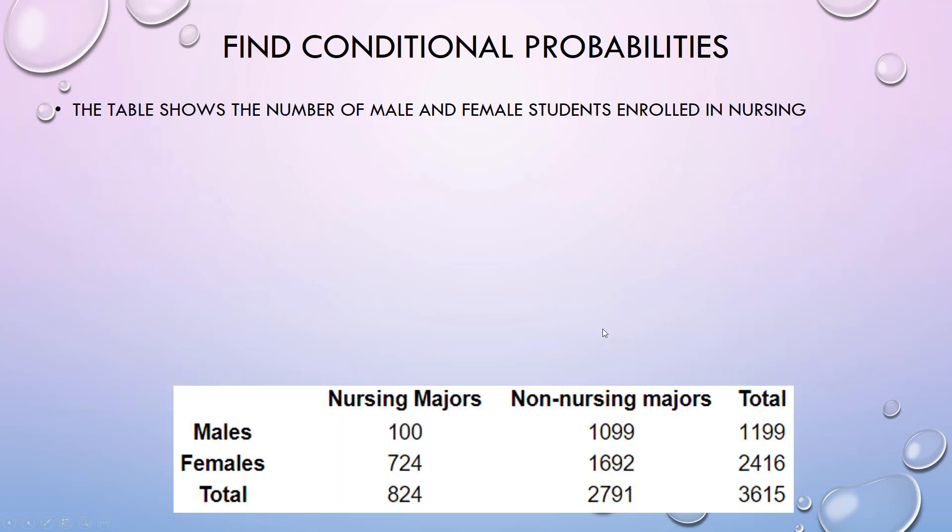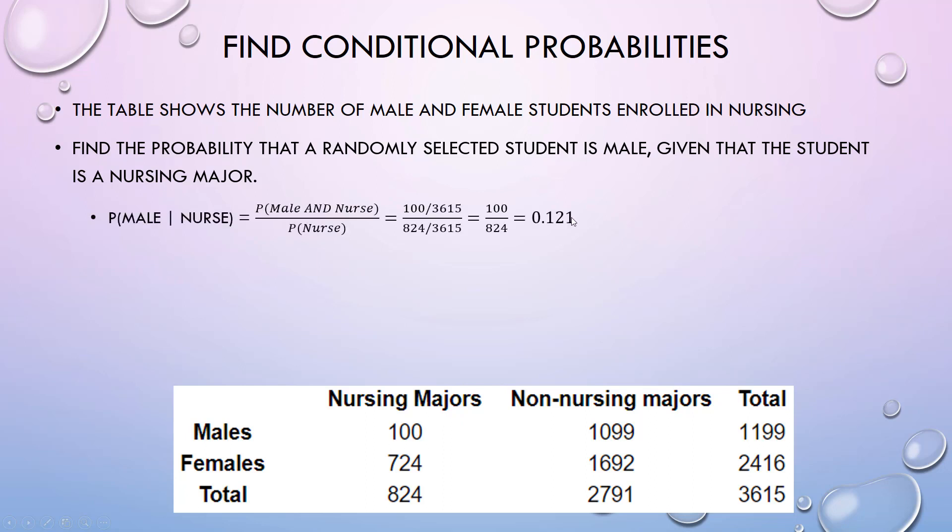Here I have a table that shows the number of male and female students enrolled in a nursing program. Find the probability that a randomly selected student is male given that the student is a nursing major. That word 'given' is when you know you have to use conditional probabilities.